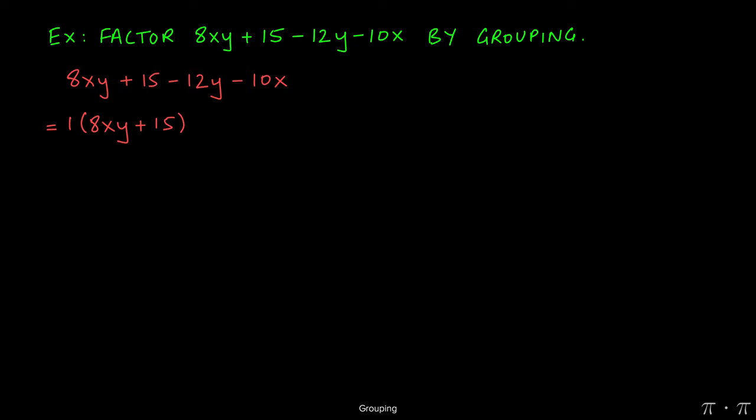For the last two terms, we see that we do have a 2 in common. 2 goes into negative 12 and into negative 10. So dividing the terms negative 12y and negative 10x by 2, we get negative 6y and negative 5x.